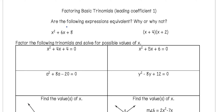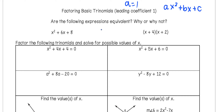Now we're going to look at how we can factor basic trinomials where the leading coefficient is 1. In our standard quadratic format, we have ax squared plus bx plus c, where a, b, and c are numerical values not equal to 0. So when a is 1, that's what we mean by the leading coefficient being 1 — when there's no other value in front of that x squared, we can use this method.